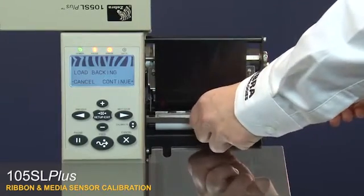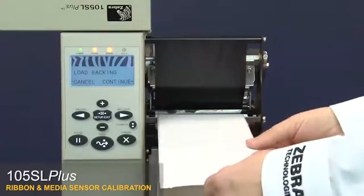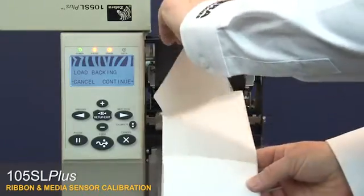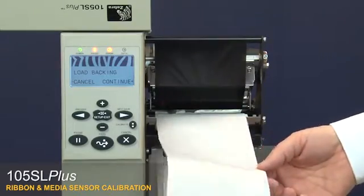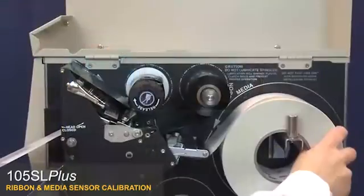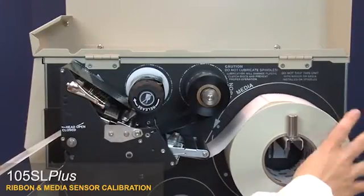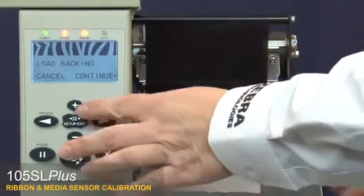Remove the labels from about 8 inches or 200 millimeters of the liner. Pull the media back into the printer so that only the liner is between the media sensors. Press plus to continue.